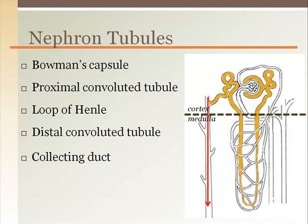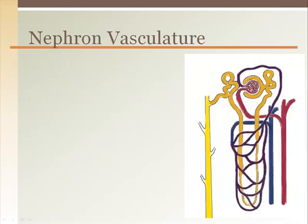The filtrate then flows into the collecting duct where the urine can be taken to the calyces, then the renal pelvis, and out of the kidney to the ureters. The vasculature surrounding the nephron stems off the interlobular artery.